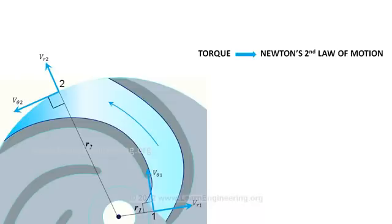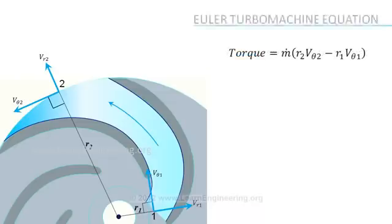The torque is given by this equation, which is also called as Euler Turbomachine Equation. The most important equation in turbomachinery.